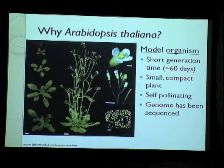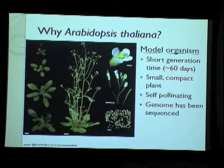It's self-pollinating, which saves a lot of trouble when going from one generation to the next and generating seeds, because the plant just takes care of that by itself. Its genome has also been sequenced — completed in 2000 and since then maintained and updated by the Arabidopsis Information Resource.